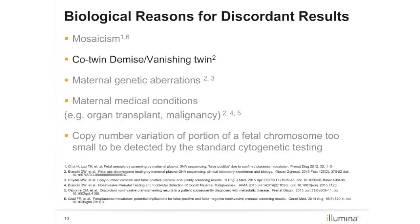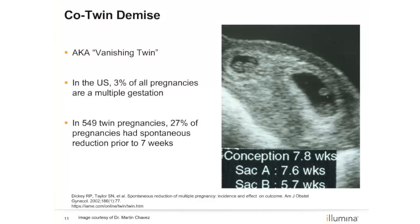Next, let's discuss how co-twin demise, also known as vanishing twin, can affect NIPT results. A co-twin demise results when the pregnancy starts as a twin pregnancy, but one fetus dies in utero, leaving only one viable fetus. Approximately 3% of all pregnancies in the U.S. are multiple gestations. In one study, 549 twin pregnancies were examined and 27% had a spontaneous reduction prior to seven weeks. Cell-free fetal DNA is cleared very quickly from a mother's bloodstream following delivery; however, we do not know how long cell-free DNA exists in circulation when non-viable products of conception are retained. It is hypothesized that cell-free DNA from the demise might be more abundant than that of the surviving singleton, which could lead to both false negative and false positive results.